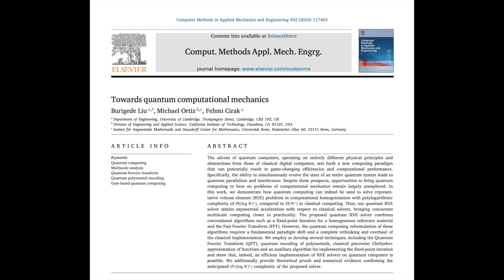How do quantum computers even work? They're not just faster — it's a whole different ballgame. Traditional computers think in bits, like tiny switches — on or off, zero or one. But quantum computers use qubits. It's like a switch that could be on, off, or both at the same time. That's something called superposition, and it lets these quantum computers explore tons of possibilities all at once. Imagine running a million simulations in the time it takes to snap your fingers, instead of just one at a time.